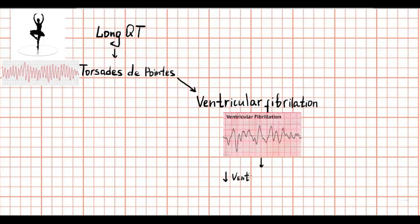Also torsades de pointes can degenerate into ventricular fibrillation. Both torsades de pointes and ventricular fibrillation can lead to impairment of ventricular output that leads to low blood pressure. This situation is called unstable hemodynamics. Therefore, it can be life threatening.